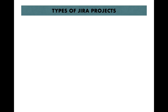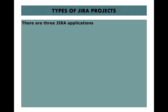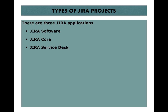Before we see different Jira project types, let's look at the product offerings from Atlassian. First is Jira Software, which is a combination of Jira Core and Jira Agile — it supports software and agile development methodology. Second is Jira Core, which provides business capability for managing projects relevant to other business units, not software development. Third is Jira Service Desk, which is more relevant for IT helpdesk-type projects.